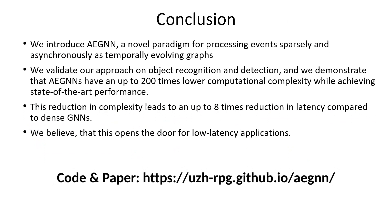In summary, in this work we introduce AGNN, a novel paradigm for processing events sparsely and asynchronously as temporally evolving graphs. We validate our approach on object recognition and detection and demonstrate that AGNNs have an up to 200 times lower computational complexity while achieving state-of-the-art performance. This reduction in complexity leads to an up to 8 times reduction in latency compared to dense GNNs. We believe this opens the door for low-latency applications powered by true event-by-event processing. The code used in this work is available online and ready to be developed further. For more information about the project, please visit our project page.